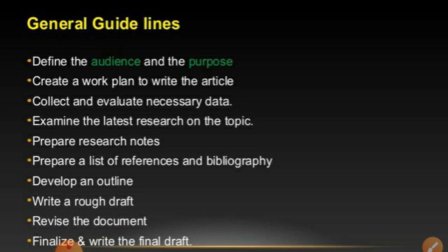General guidelines for writing a technical article include: define the audience and the purpose, create a work plan to write the article, collect and evaluate necessary data, examine the latest research on the topic, prepare research notes, prepare a list of references and bibliography, develop an outline, write a rough draft, revise the document, and finalize and write the final draft.